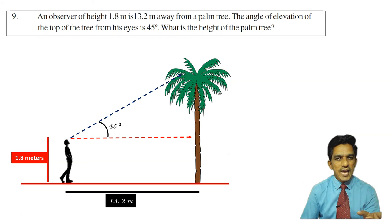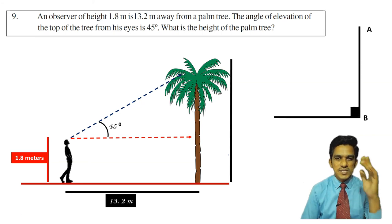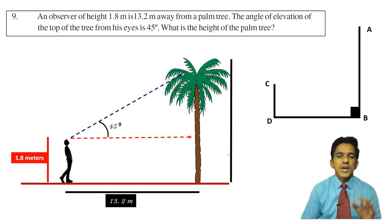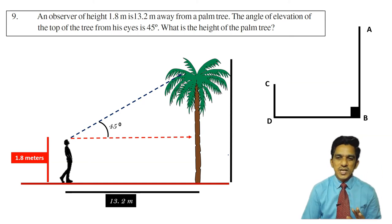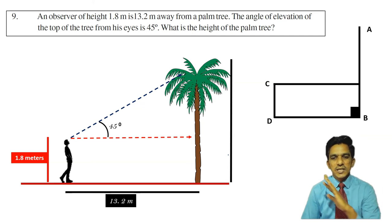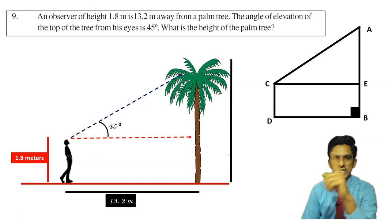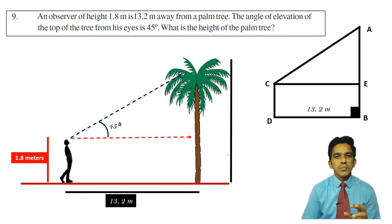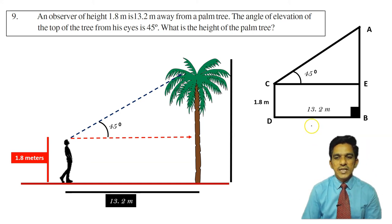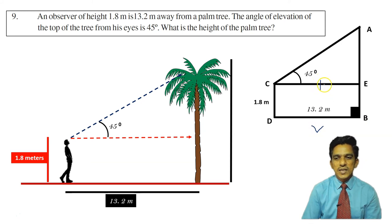Let us draw a diagram. AB is the palm tree. CD is the observer. The horizontal from the observer's eye level makes an angle of 45 degrees as the line of sight goes to the top of the tree. The figure BDCE is actually a rectangle, so opposite sides are equal. Therefore CE equals BD equals 1.8, and CE equals 13.2. We need to find the total height AB.